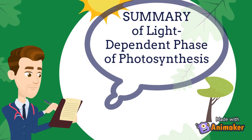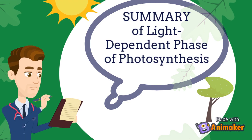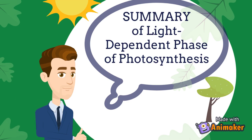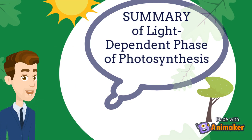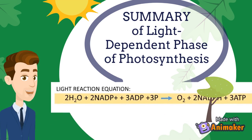In photosystem 1, energy is absorbed from the sun. De-energized electrons travel down the electron transport chain. The high-energy electrons are used to produce the high-energy carrier NADPH from NADP+. To summarize the light reaction, we can write it in this equation.